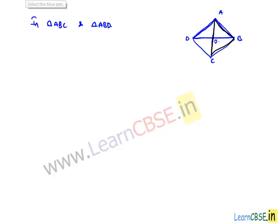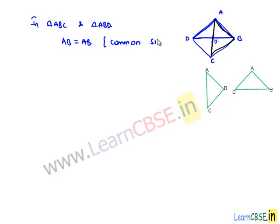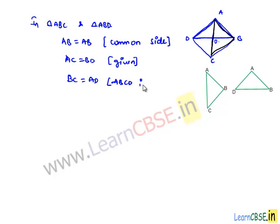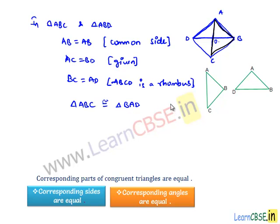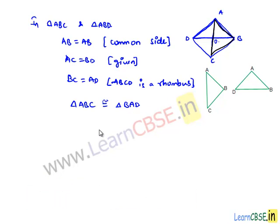In both triangles, AB is equal to AB since it is a common side, AC is equal to BD since the diagonals are given as equal, and also BC is equal to AD as we established that ABCD is a rhombus. The three corresponding sides in the two triangles are equal, therefore we can say triangle ABC is congruent to triangle BAD. When two triangles are congruent, their corresponding angles will be equal, therefore angle ABC is equal to angle BAD.